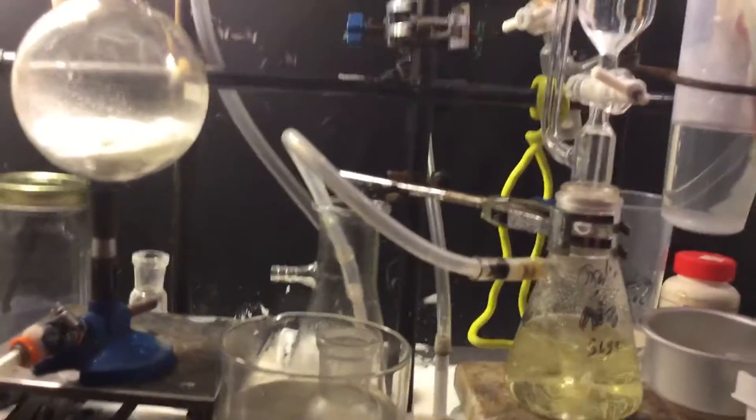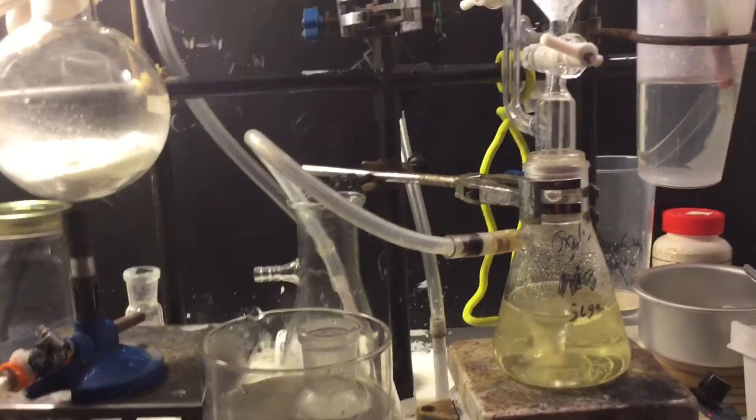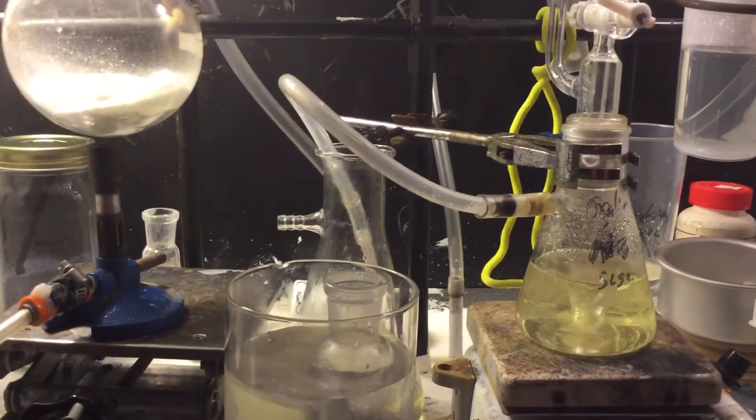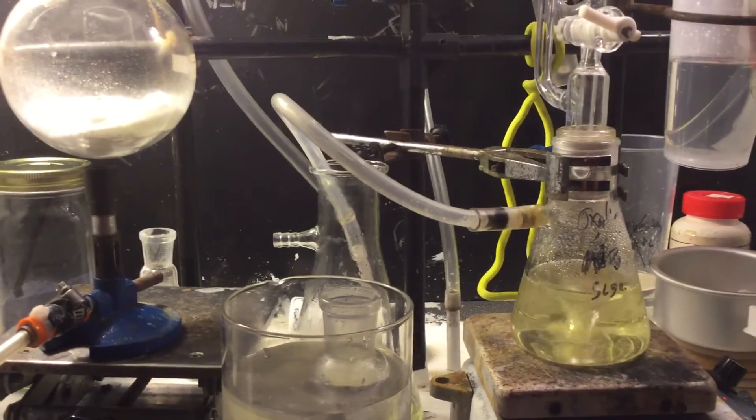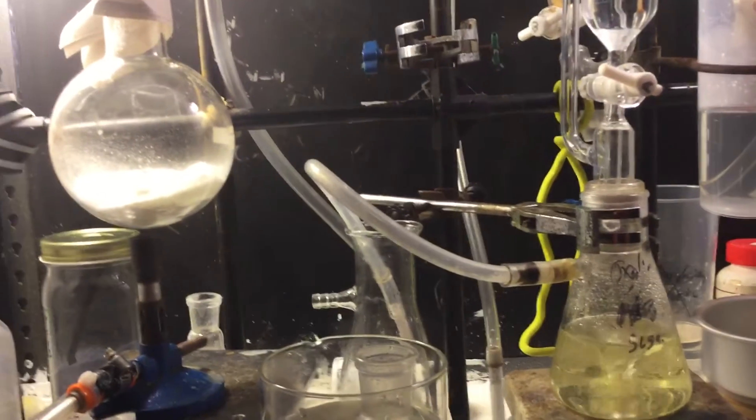There are two methods for the synthesis of p-toluenesulfonyl chloride. The method I was going to use was using chlorosulfuric acid, just mix it with toluene, keep it in an ice bath for 12 hours, heat it a little bit, and ta-da, you have your p-toluenesulfonyl chloride.